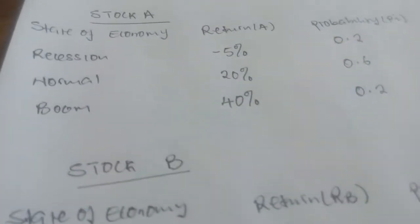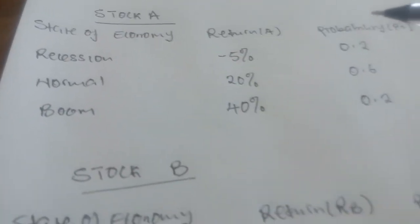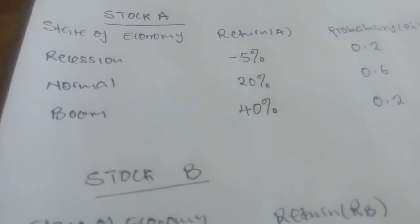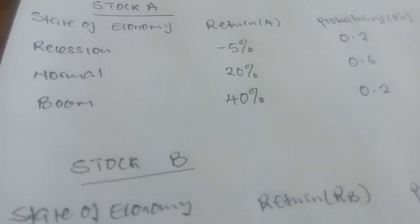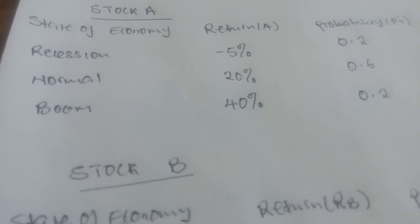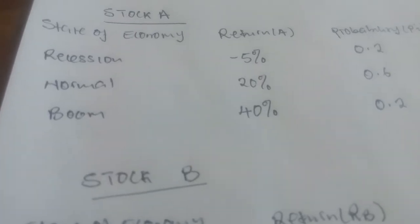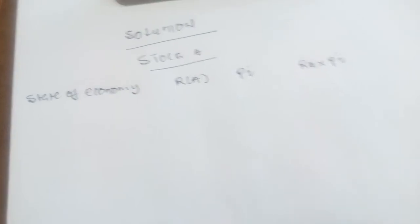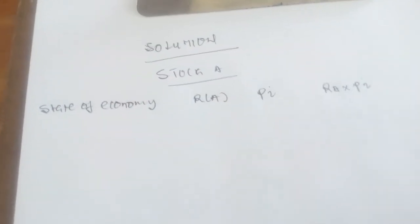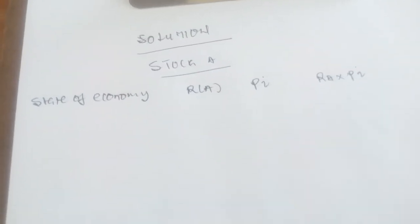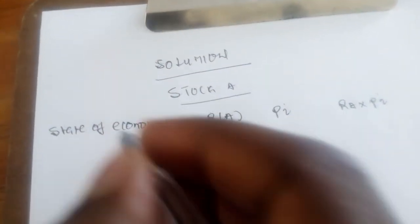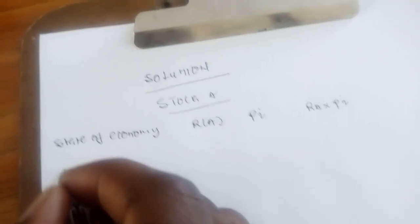To begin with, I will start with stock A and how we can compute the expected rate of return given the assumptions and probabilities. It's very easy, so just follow the procedures I will take. For stock A, I prefer using the tabular approach - it's very easy to understand. We have the state of the economy, the first one being if the economy is in recession.